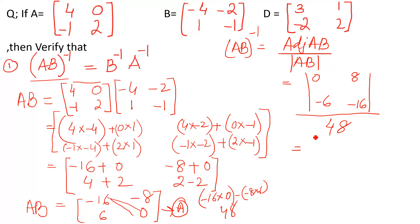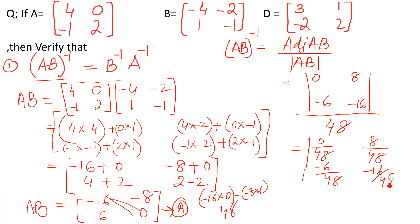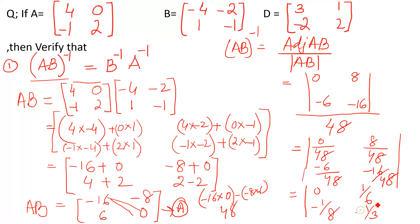We divide every entry of the adjoint by 48: 0/48 = 0, 8/48 = 1/6, -6/48 = -1/8, and -16/48 = -1/3. So AB whole inverse equals [0, 1/6; -1/8, -1/3]. This is the left hand side.